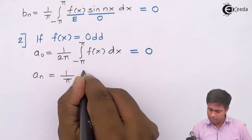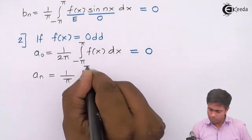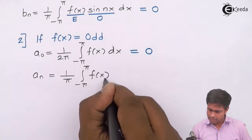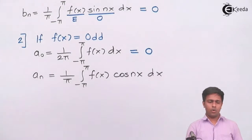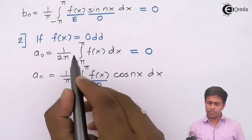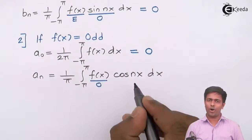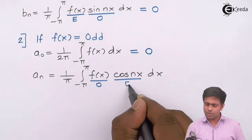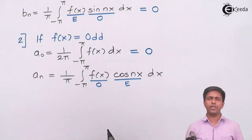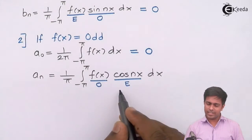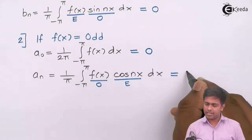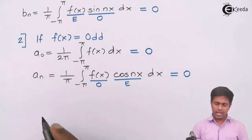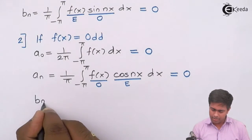For aₙ: the formula is (1/π) times the integration from negative pi to pi of f(x) cos(nx) dx. Since f(x) is odd and cos(nx) is universally even, odd multiplied by even is odd. Since the resultant function is odd and the range is from minus a to a, the integral equals 0, so aₙ = 0.